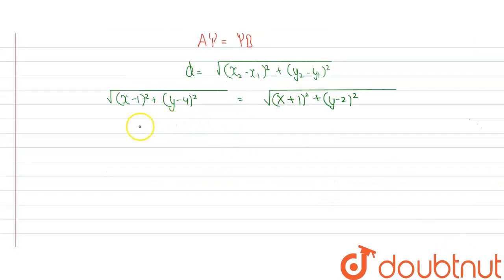Now by squaring both sides we will get x minus 1 whole square plus y minus 4 whole square is equal to x plus 1 whole square plus y minus 2 whole square.